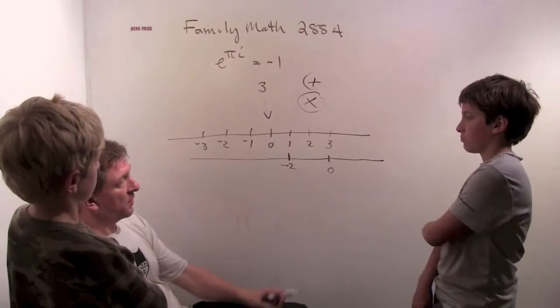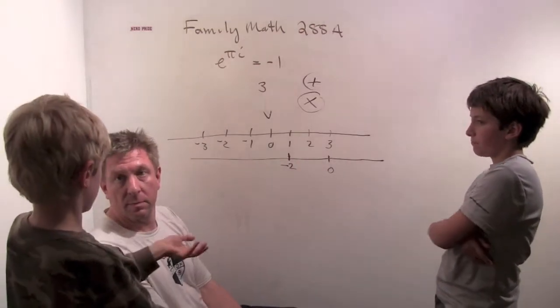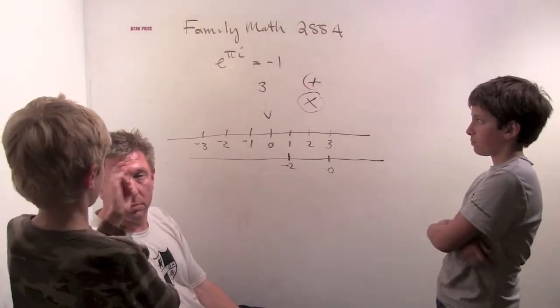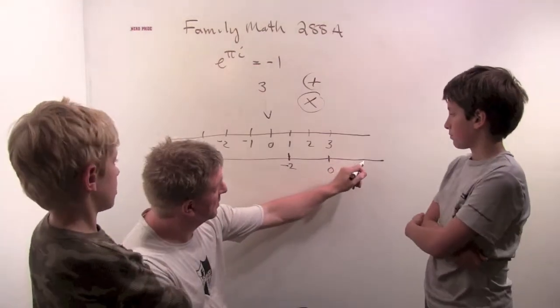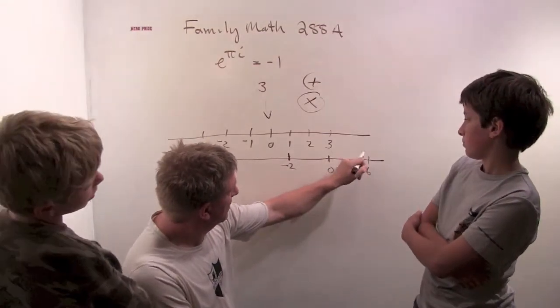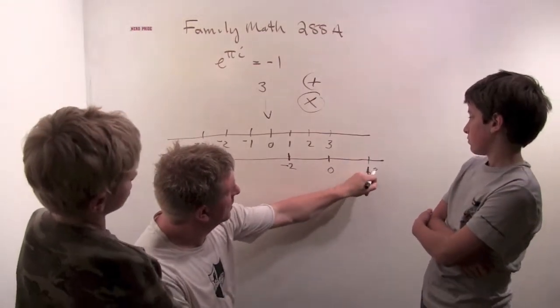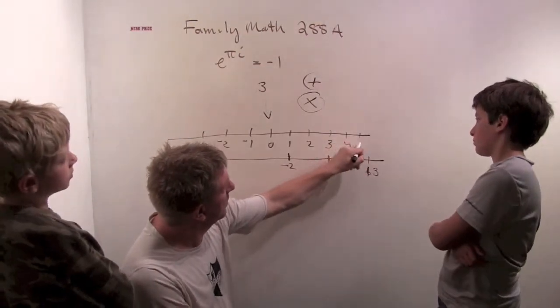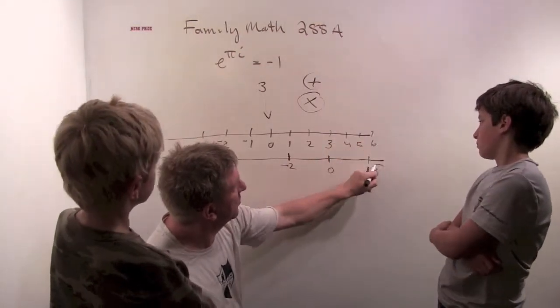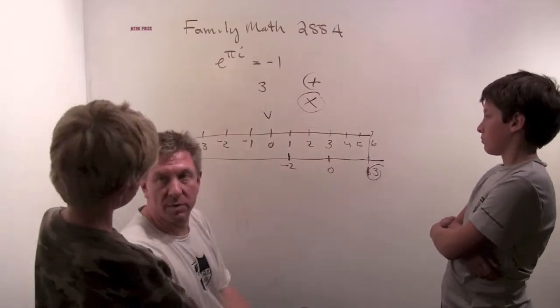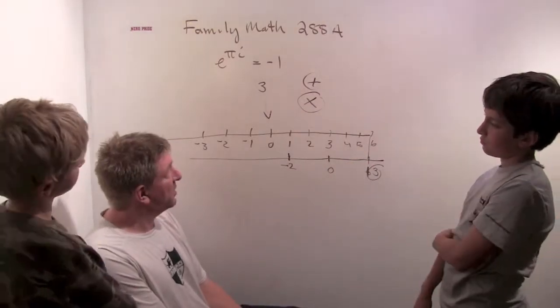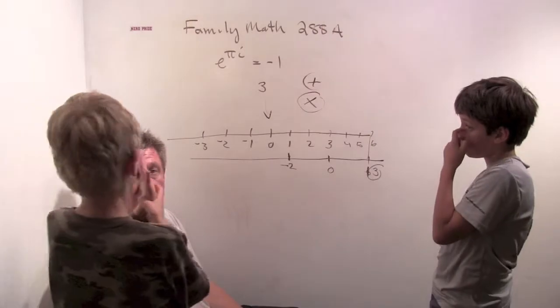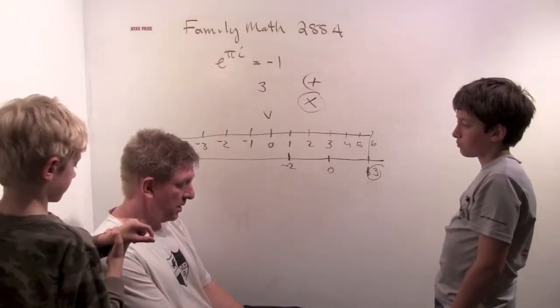Where does 3 go? 3 just stays. Wait, 3 goes to 6. 3 goes to 6. So, 6... sorry, 3, 4, 5, 6. So, 3 now lives where 6 used to live. Yeah. So, what am I doing? What is my adder doing? It's sliding the number line. Okay.